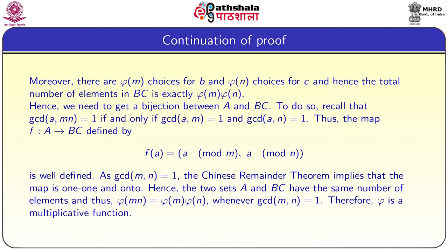Recall that gcd(a, mn) = 1 if and only if gcd(a, m) = 1 and gcd(a, n) = 1. We define the map f: A → BC by f(a) = (a mod m, a mod n). This is well-defined, and since gcd(m, n) = 1, by the Chinese Remainder Theorem, this map is a bijection. Hence the two sets A and BC have the same number of elements. Thus φ(mn) = φ(m)·φ(n) whenever gcd(m, n) = 1, so φ is a multiplicative function.